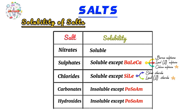Another category is carbonates. When it comes to carbonates and hydroxides, just remember all of these are insoluble — all of them — with the exception of potassium carbonate, sodium carbonate, and ammonium carbonate. And again for hydroxides: potassium hydroxide, sodium hydroxide, and ammonium hydroxide are soluble. As for the rest, they are all insoluble.